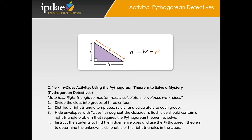Let's take a look at our next two-dimensional activity: Pythagorean Detectives. The Pythagorean Detectives activity is an exciting and interactive way for students to learn about the Pythagorean theorem. By turning the classroom into a mystery-solving adventure, students will apply their knowledge of geometry in a fun and engaging context. You'll begin by dividing the class into groups of three or four students and gathering the necessary materials, which include right triangle templates, rulers, calculators, and envelopes containing clues.